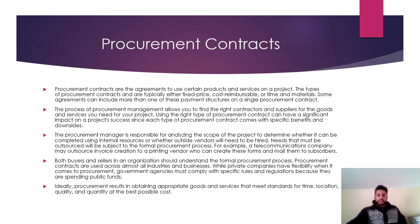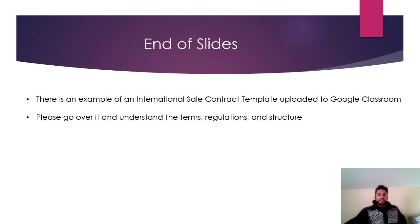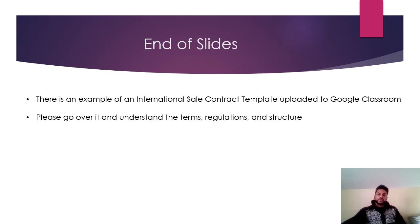Procurement contracts are basically like a sales contract — it's a purchasing contract. The difference is a sales contract is where you're selling something, while a procurement contract is where you're buying something. I'll post an international sales contract template to Google Classroom so you can go over and understand the terms, regulations, and structure. That's the end of the slides — I'll see you next week.